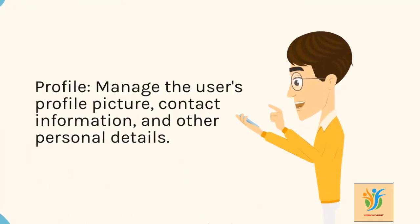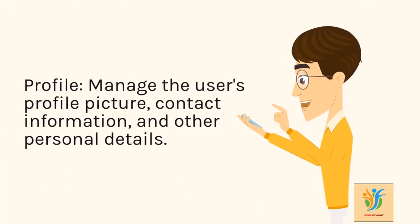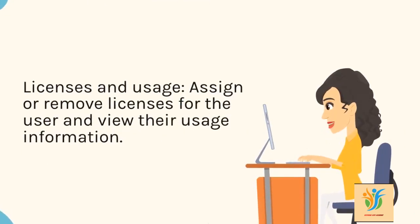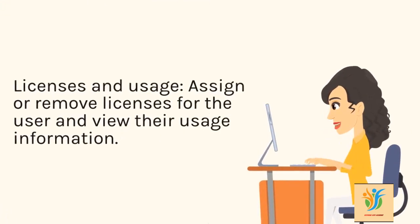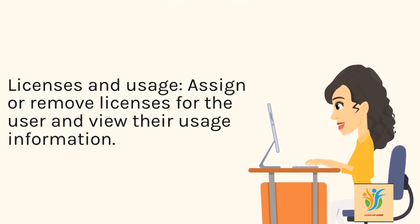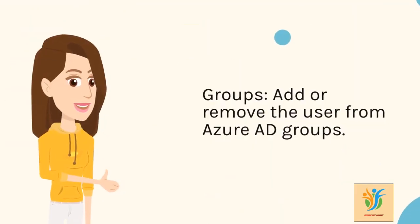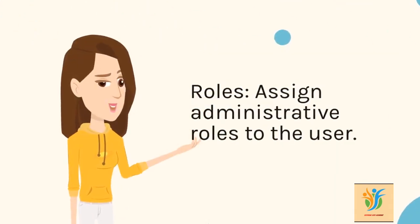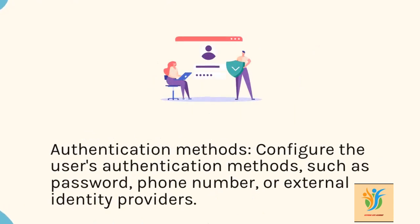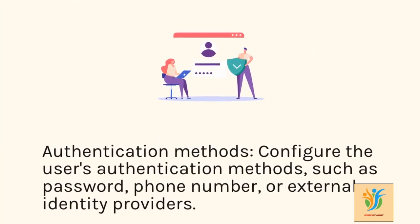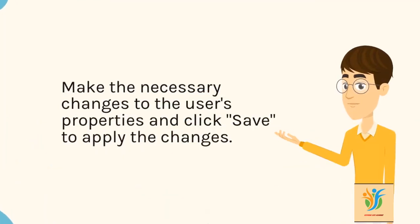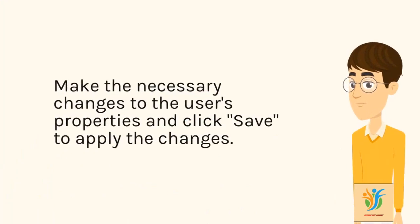Profile: manage the user's profile picture, contact information, and other personal details. Licenses and usage: assign or remove licenses for the user and view their usage information. Groups: add or remove the user from Azure AD groups. Roles: assign administrative roles to the user. Authentication methods: configure the user's authentication methods, such as password, phone number, or external identity providers. Make the necessary changes and click Save to apply the changes.